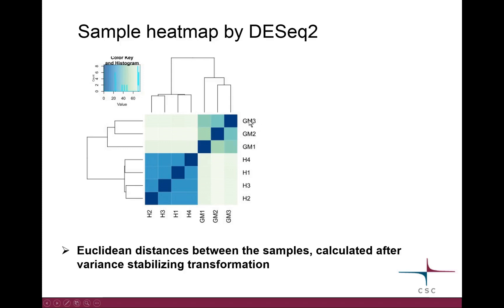Here you should be able to see that, for example, this one age group is grouping nicely compared to this GM group. So these are the things that you want to check.